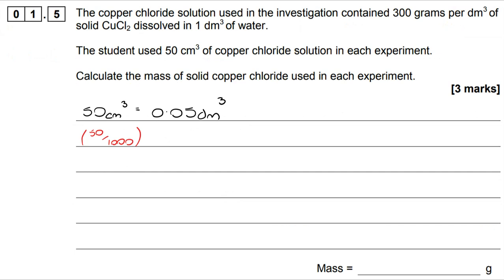From there, if I know that 1 decimetre cubed contains 300 grams, I need to find out what 0.05 contains, so I do 0.05 multiplied by 300, and that takes me to my answer of 15. I'm just going to show here where the 3 marks come from. We get 1 for the conversion of the volume, 1 for the working out, and 1 for the mass. If you get to the right mass, you would get all 3 marks there.